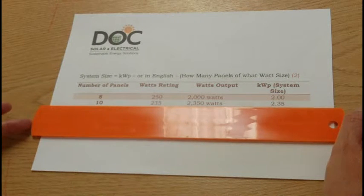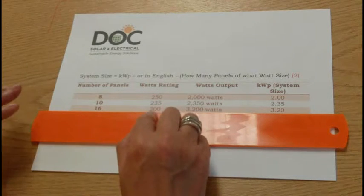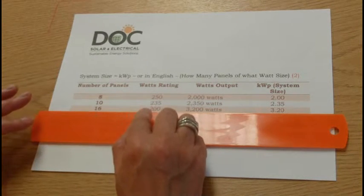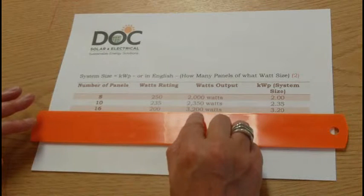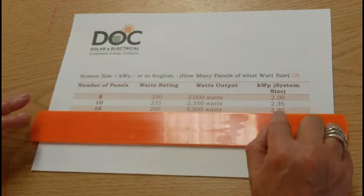Lots of people are interested in 16-panel systems. 16 panels with panels rated at 200 watts. 16 times 200 will give you 3,200 watts, or 3.2 kilowatts peak.